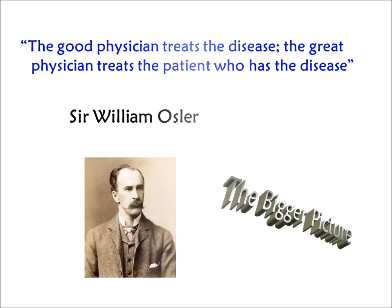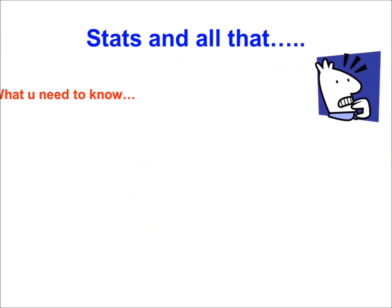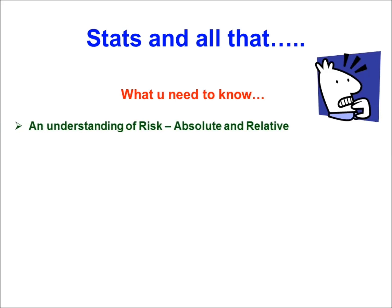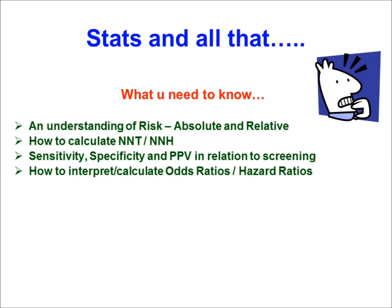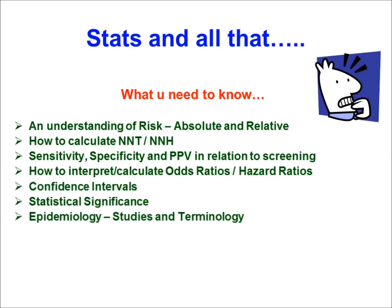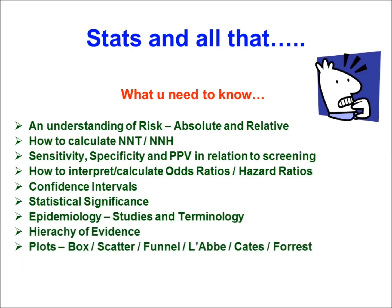What you will need to know for the statistics component of the AKT are the following: an understanding of risk and how to calculate it, both in the context of absolute and relative measures; how to work out numbers needed to treat and numbers needed to harm; sensitivity, specificity and predictive values in relation to screening; how to interpret and calculate odds ratios, confidence intervals, statistical significance, studies and their terminology, the hierarchy of evidence, and ultimately how to extract risk from plots. There are many that we're going to be covering in this online lecture.